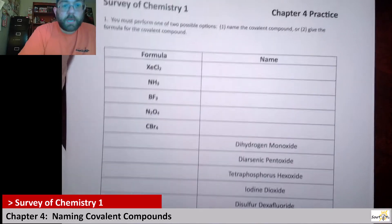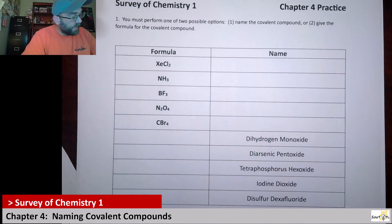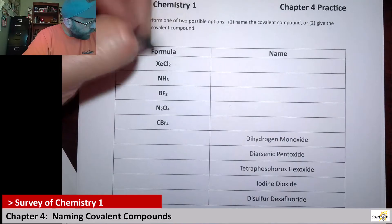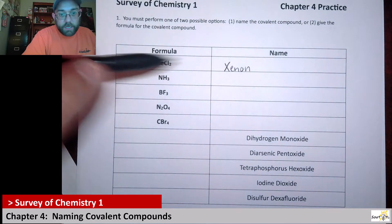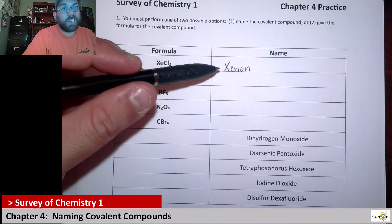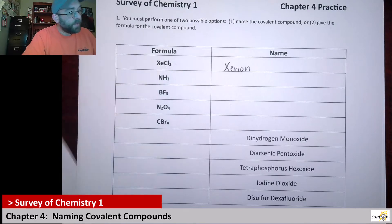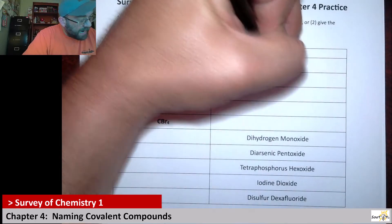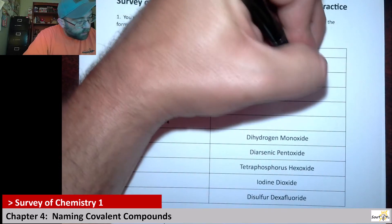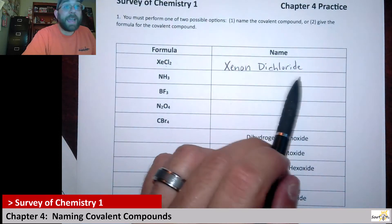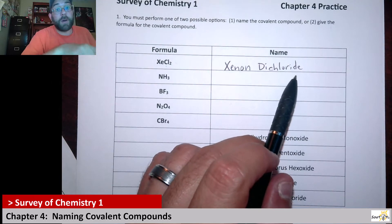So when we look here we're given formulas and it wants to give us a name. So this is xenon, and there's only one of them, so you don't have to put the mono for that, because it's the first element listed. But with the chlorine here, you do have two of them. So you do have to put di in front of not chlorine, but chloride, right. So the same thing happens here that we did with ionic naming, where we drop the ending off and we put -ide.